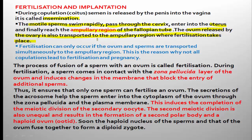The site of fertilization in humans is the ampullary region. Fertilization can only occur if the egg and sperm are transported simultaneously to the ampullary region. The fertility capacity of the sperm is only 48 hours after release into the female reproductive tract, and the fertility capacity of the egg is only 24 hours after ovulation.